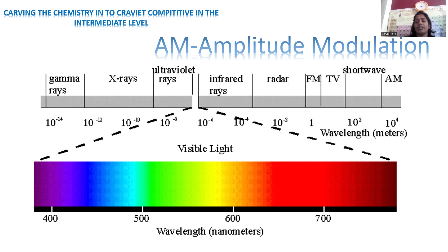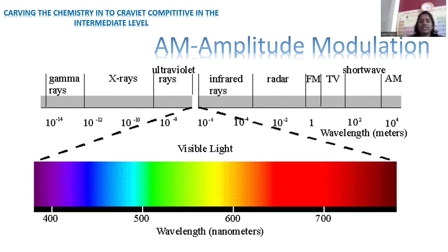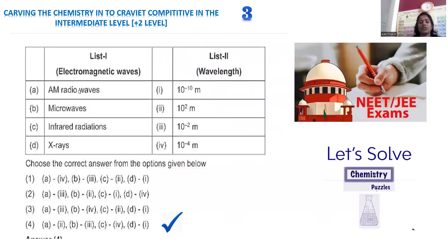In between ultraviolet and infrared, a small segment is visible light, where you find rainbow (VIBGYOR) colors. Gamma rays are at 10⁻¹⁴ m; X-rays from 10⁻¹² to 10⁻¹⁰ m; ultraviolet 10⁻⁸ m; visible rays around 10⁻⁶ m; infrared 10⁻⁴ m; radar (microwave) 10⁻² m; and AM/FM/TV waves at 10² to 10⁴ m (positive values). This is how we segment all fractions based on their wavelength values.